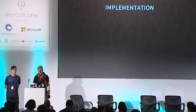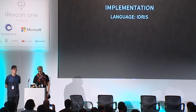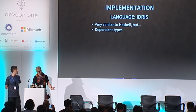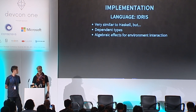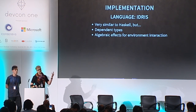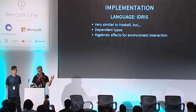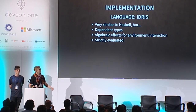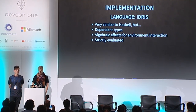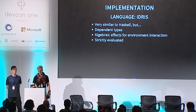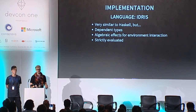Haskell is lazily evaluated, which becomes prohibitively expensive in real life on the EVM as it is now, and then we found Idris. Idris is very similar to Haskell but has key differences: first, it is dependently typed, and second, side effects are modeled with algebraic effects. These two things combined give us the expressiveness in the type signatures we saw before. Idris is also strictly evaluated from the get-go, so we don't need to make any changes there, and as a bonus we don't have to venture into the murky depths of the GHC API.